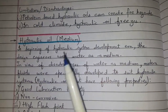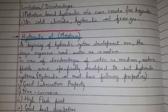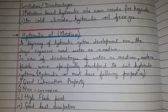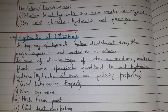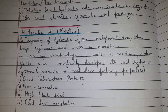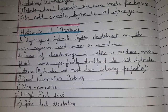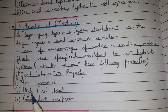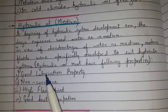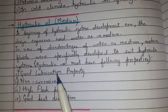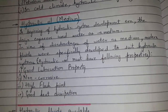Hydraulic oil or medium. In the beginning of hydraulic system development era, the design engineers used water as a medium, but it had many disadvantages. So modern fluids were specifically developed to suit hydraulic systems. Hydraulic oil must have the following properties: good lubrication property, non-corrosive, high flash point, and good heat dissipation.